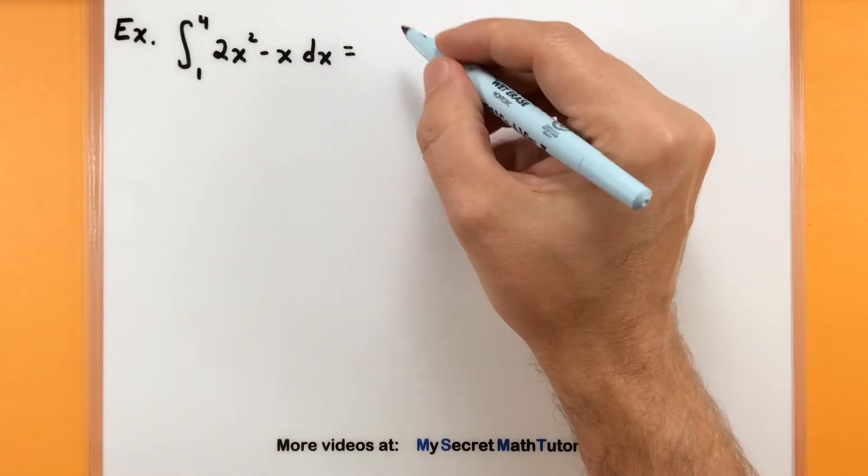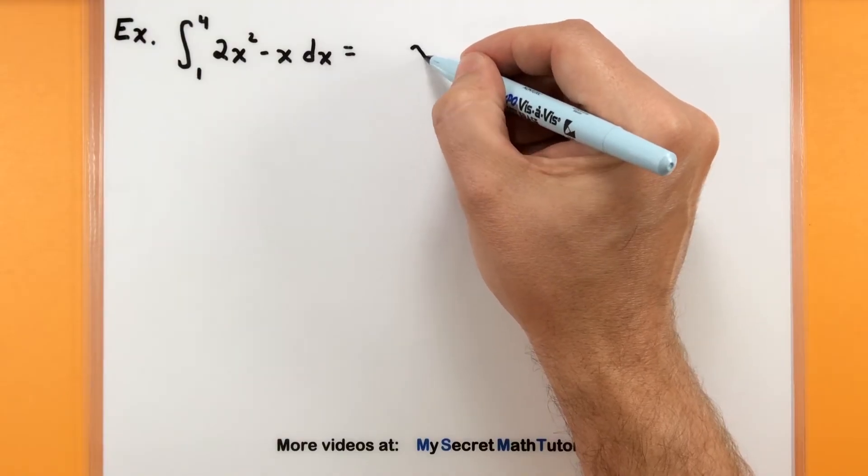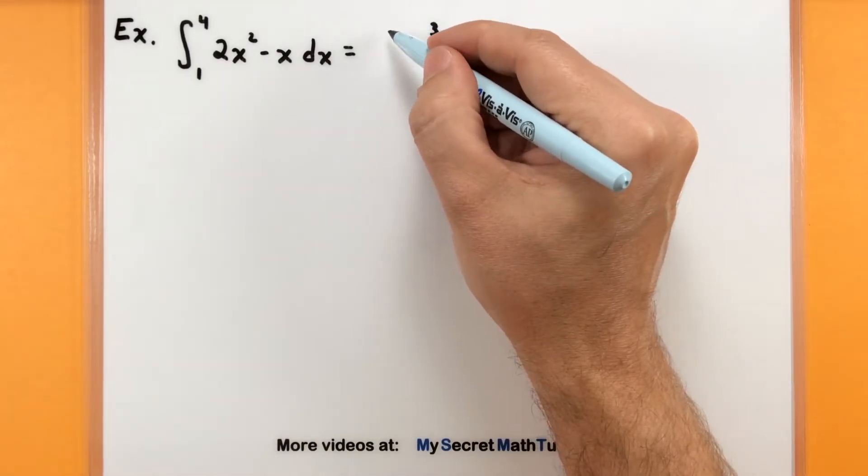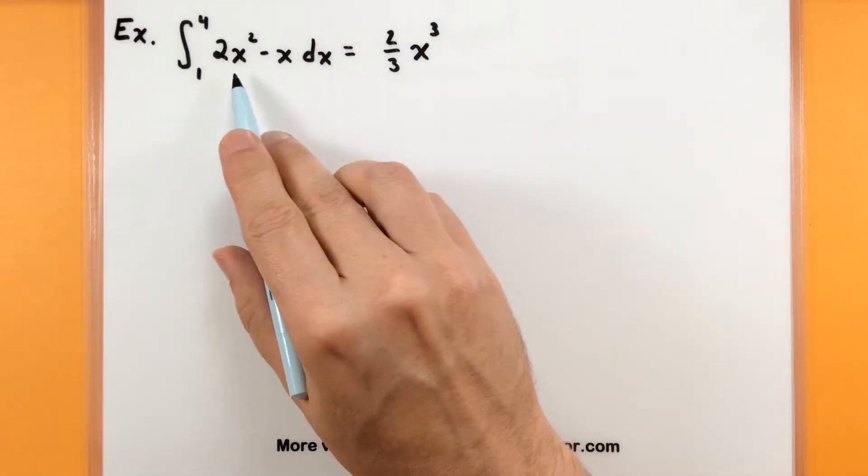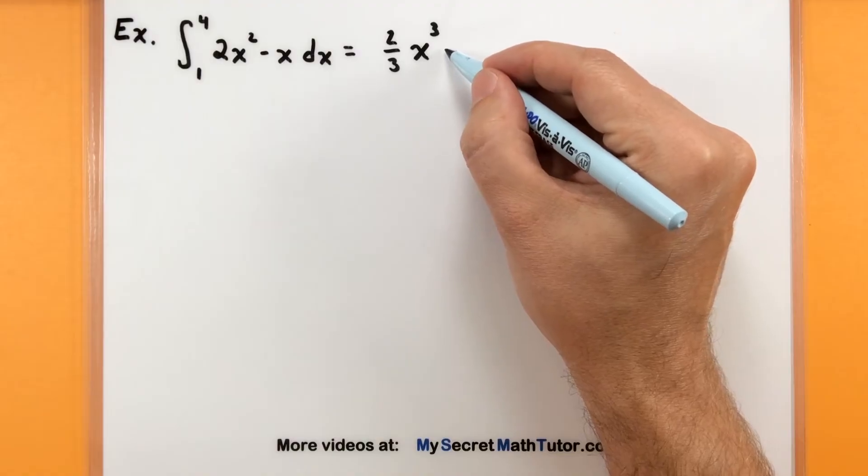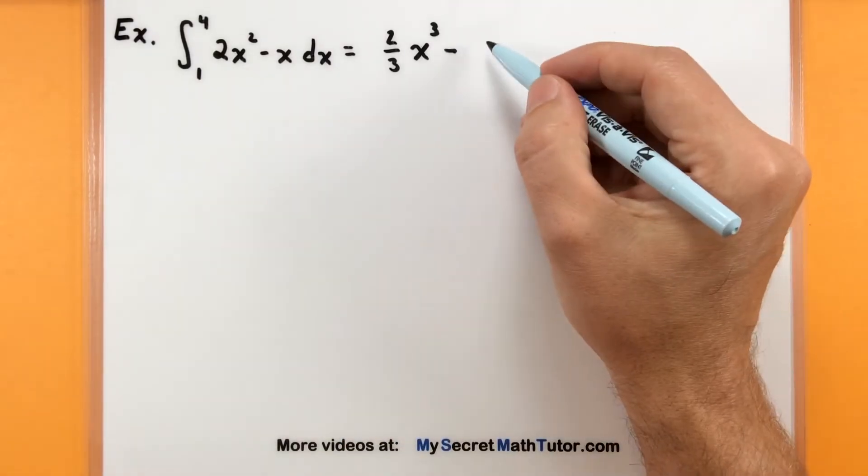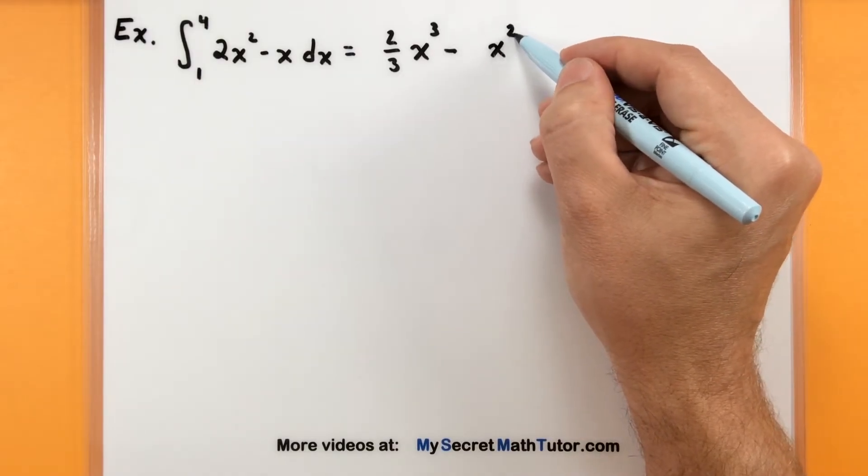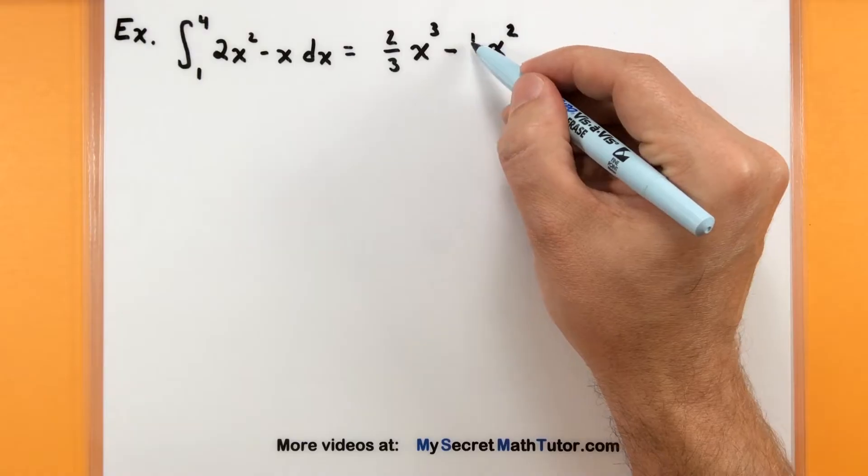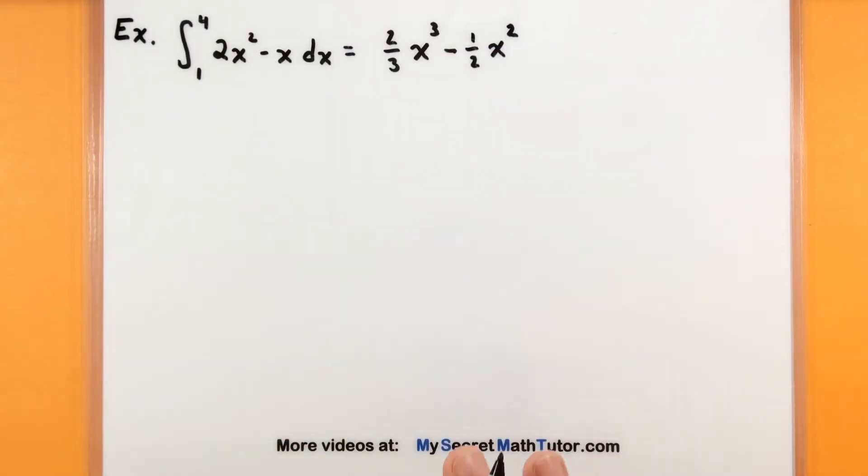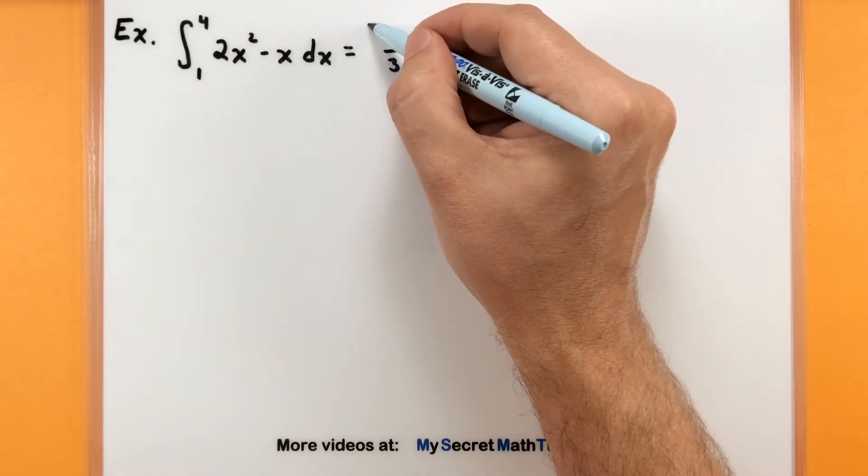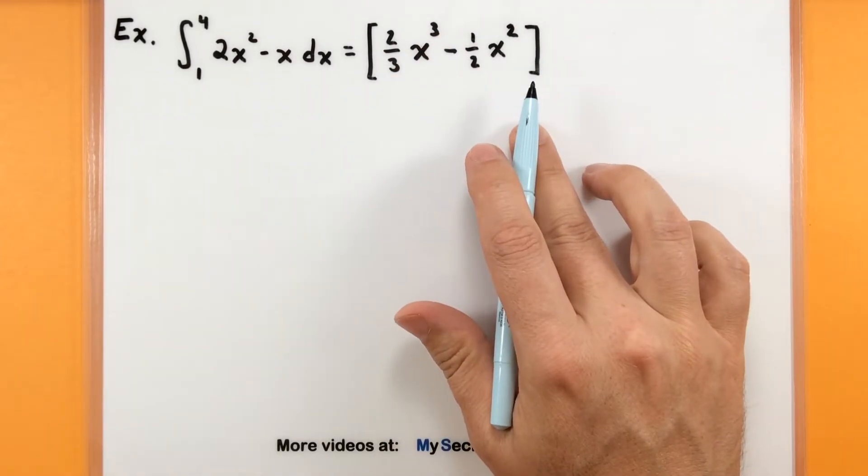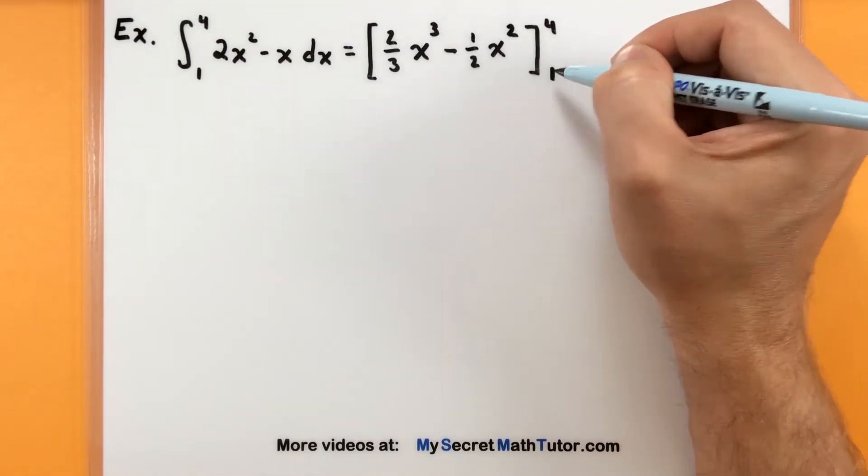In this particular one, I'm going to use the power rule, so we'll add 1 to the power. In this case, it goes from 2 to 3, and we'll divide by that new power. So 2 is going to be divided by 3. Next part here, since it's being subtracted, I can just find its antiderivative the same way. We'll add 1 to the power, turn it into a 2, and divide by that new power. The way I want to remember that I still need to plug in some bounds is to put in a pair of square brackets and then put my bounds right off to the side.